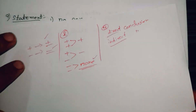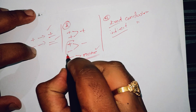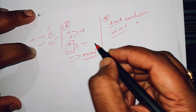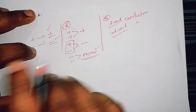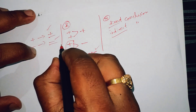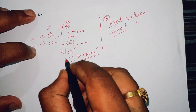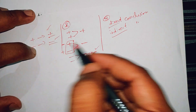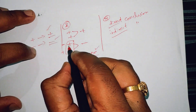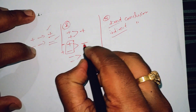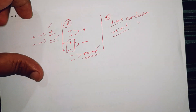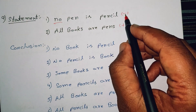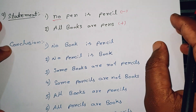Here we have a positive statement. Negative conclusions are correct when we have one negative and one positive. First is negative, second is positive. Every combination of one positive and one negative means negative conclusions are correct. So we check: one negative, one positive, and one positive setting.